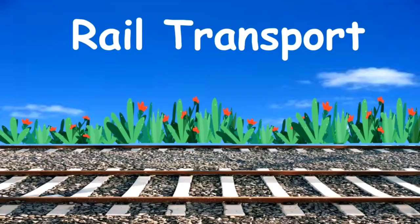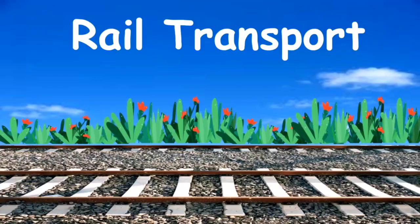Children, let's learn about rail transport. Look at the screen. What can you see? You can see a track. Rail transport needs the track to run — like tram, rail, or metro. They can't run on the road; they have to run on the track.